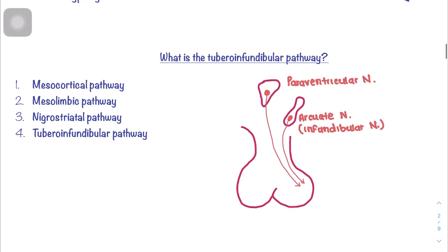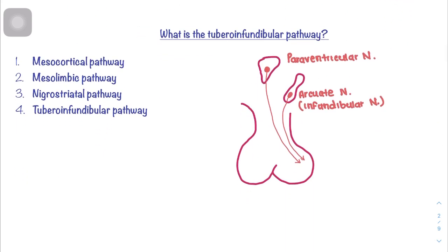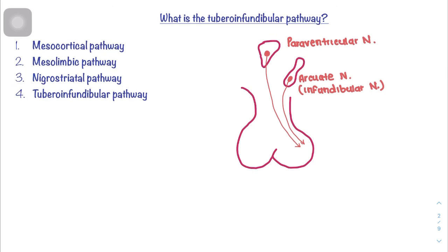There are four dopaminergic pathways in the body: the mesocortical, mesolimbic, nigrostriatal, and tubero-infundibular pathways. The tubero-infundibular pathway is a closed circuit between the hypothalamus and the pituitary. The paraventricular and arcuate nuclei in the hypothalamus synthesize dopamine that acts on prolactin-producing cells. In this context, dopamine is also known as prolactin inhibiting hormone.